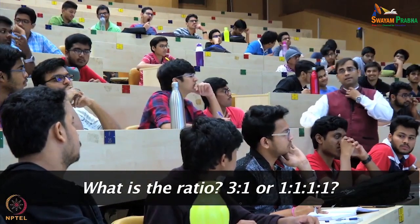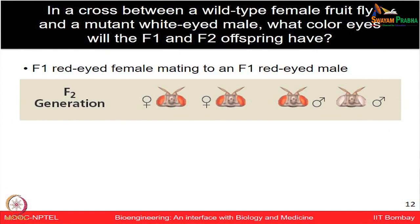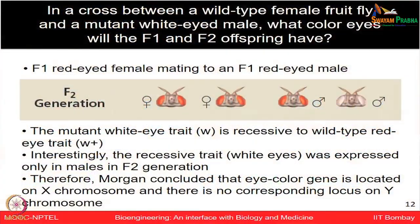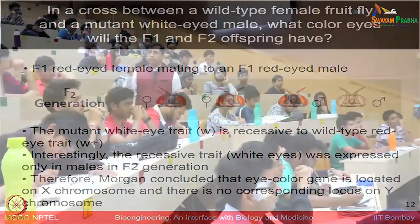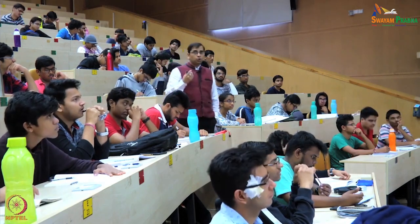Phenotypically, 3 out of 4 are red-eyed, giving a 3 to 1 ratio. The main points from this cross are that the white-eye trait is recessive compared to the wild type red-eye trait. The recessive white-eye was expressed only in males in the F2 generation, which led Morgan to conclude that the eye color gene is located on the X chromosome and not on the Y chromosome. The conclusion from the experiment is that chromosomes are indeed the locations of what Mendel defined as heritable factors.